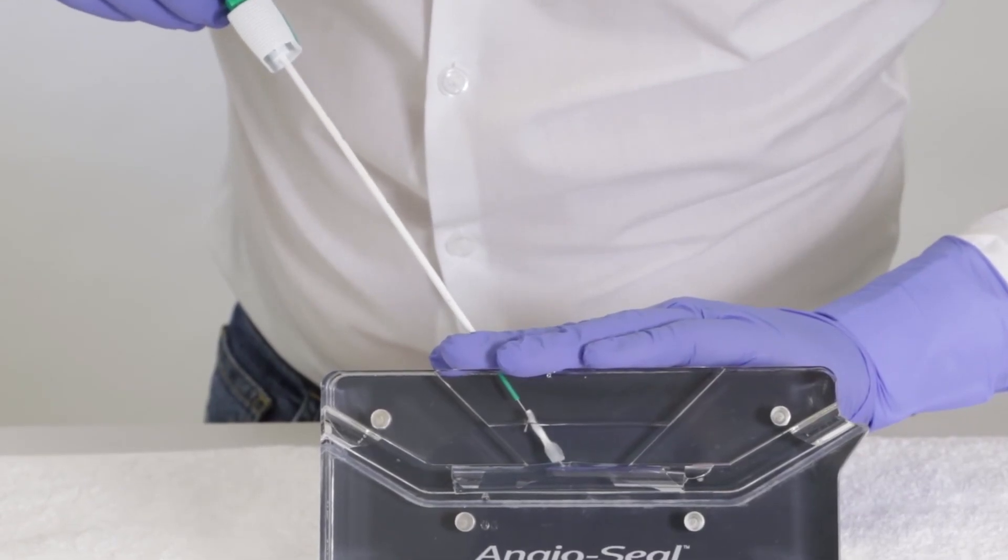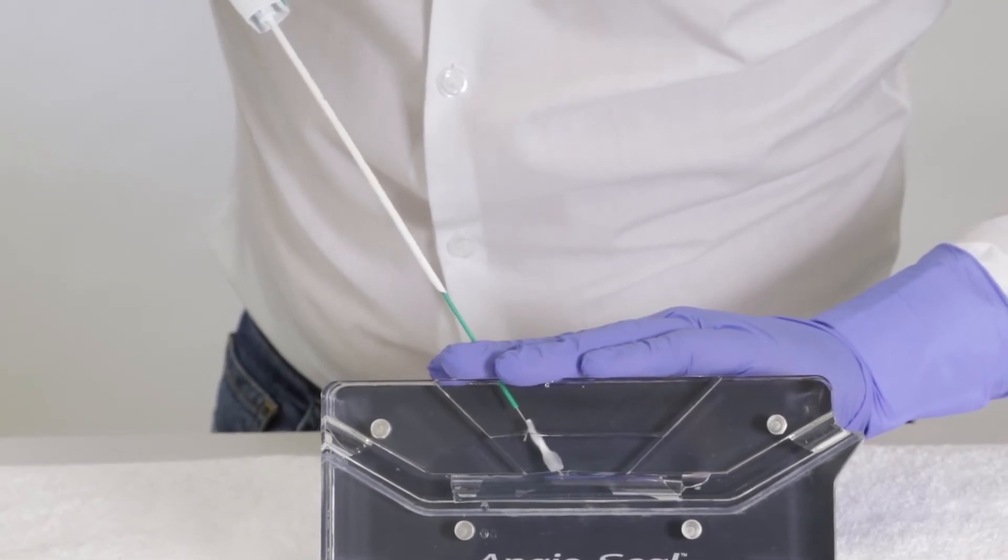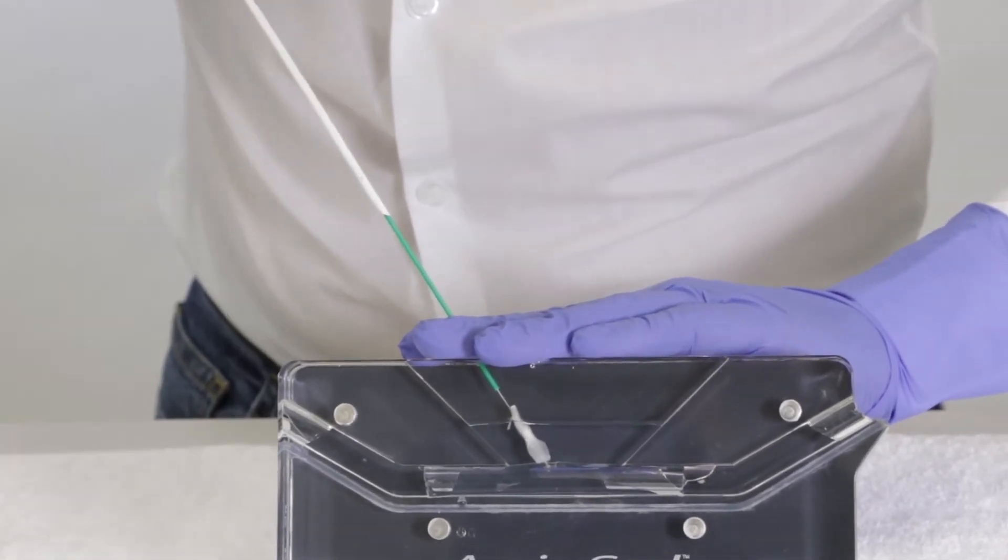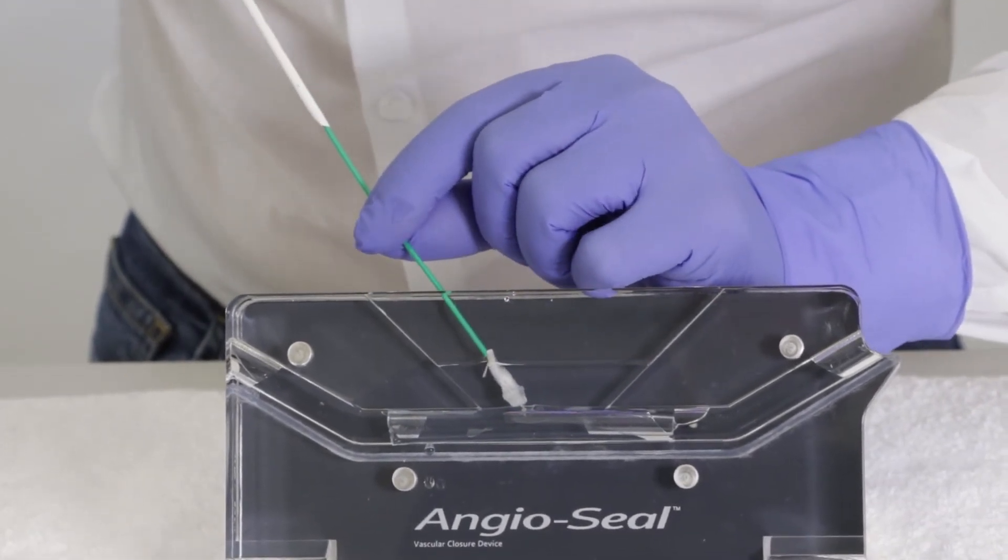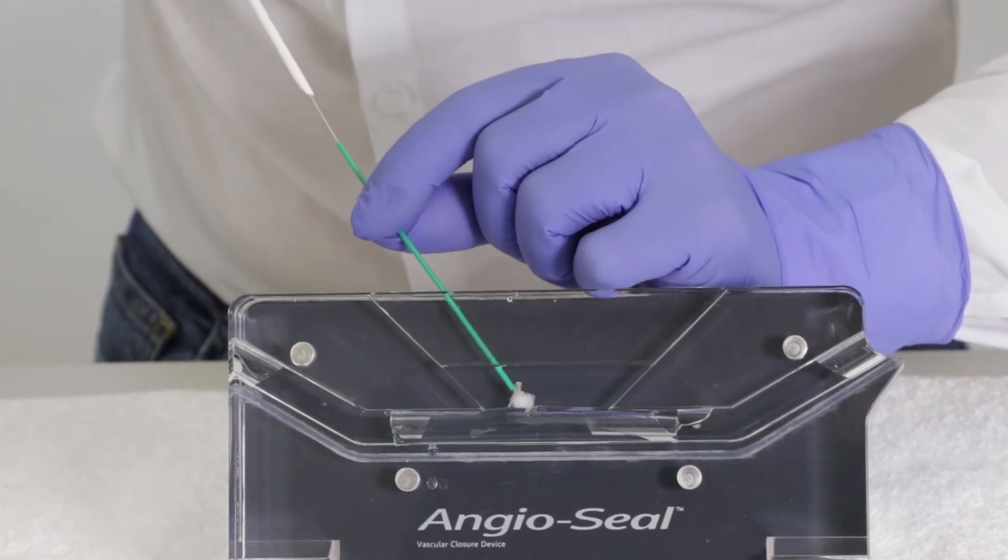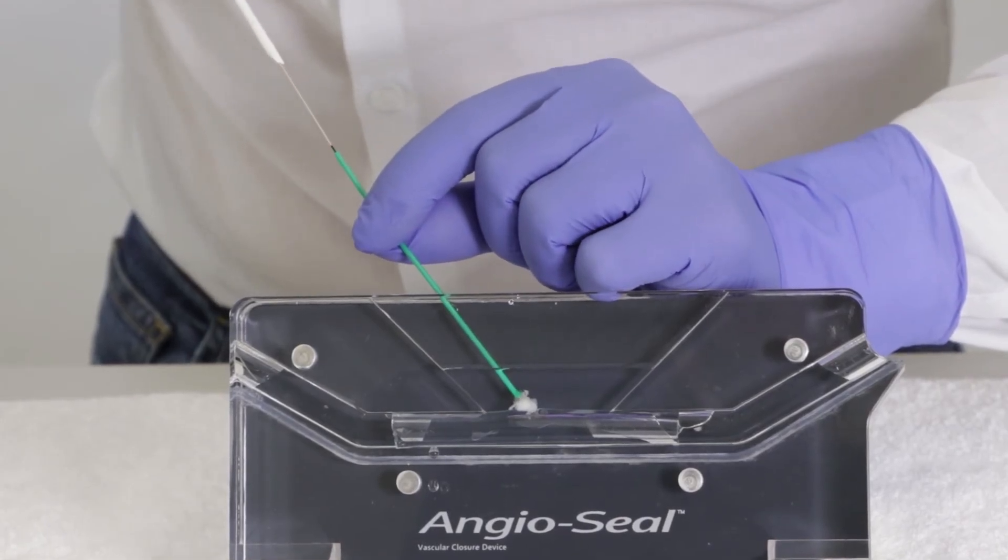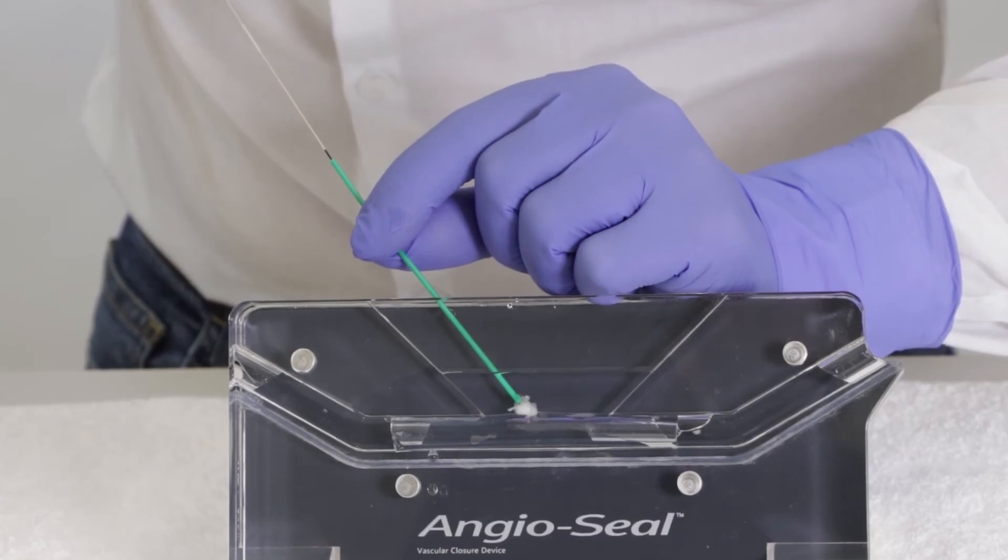The collagen expands in contact with blood and fluids, so in this case the water is doing that. You keep pulling and now the collagen is exposed and a green tube will appear. It's called the tamper tube. Gently push down the tamper tube to the collagen while always keeping tension on the suture until part of the black marker appears along the suture.